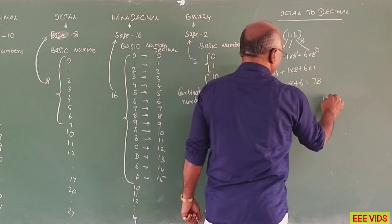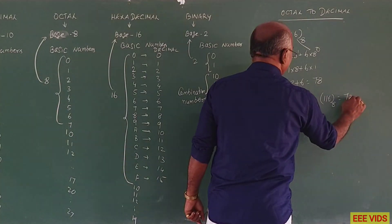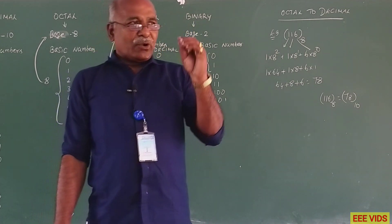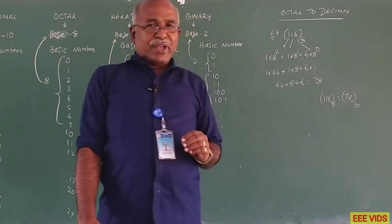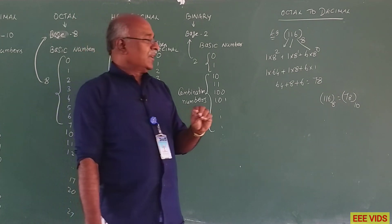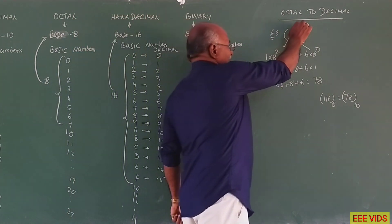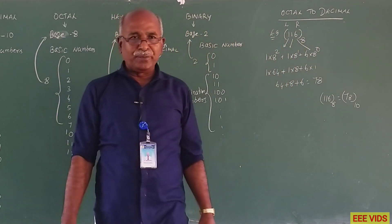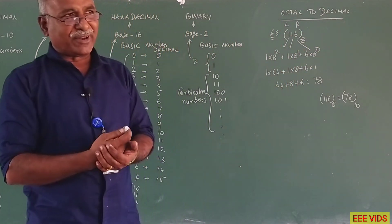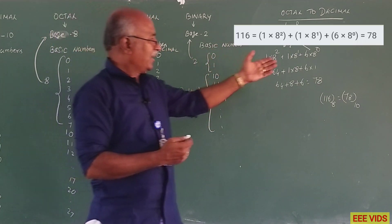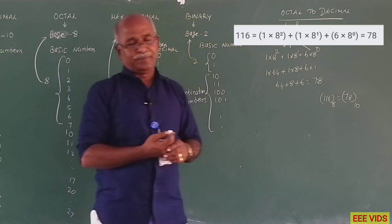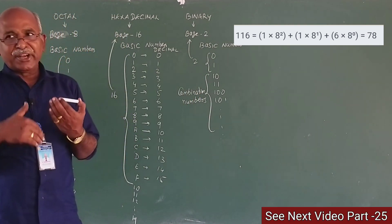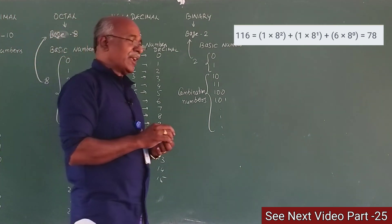116 in octal is equal to 78 in decimal. From right to left, you can use octal to power: first character is 8 power 0, then 8 power 1, 8 power 2 — this increases. For binary to decimal, every conversion also uses power 0.